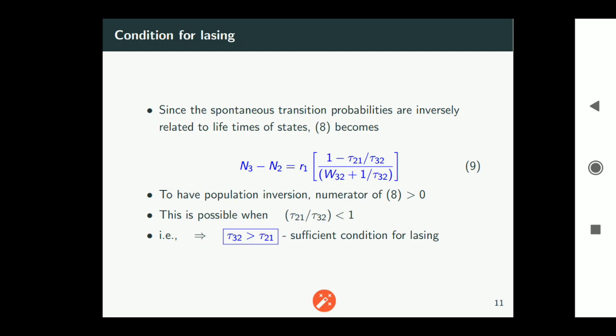So tau32 is actually lifetime of the level e3 and tau21 is a lifetime of the level e2. So that is an important condition to have lasing in a four level system. So if e3 is metastable state which we have earlier assumed, if it is indeed a metastable state then this condition is easily met. tau32 greater than tau21. So that's a sufficient condition for a four level system.